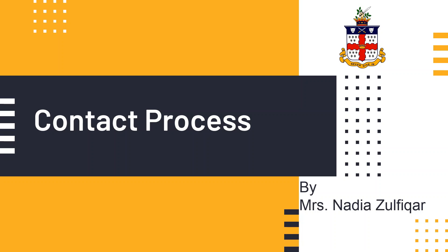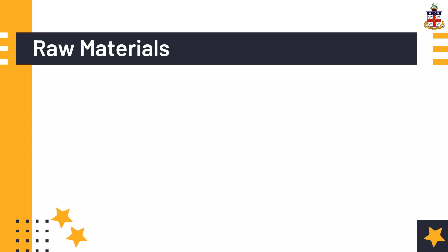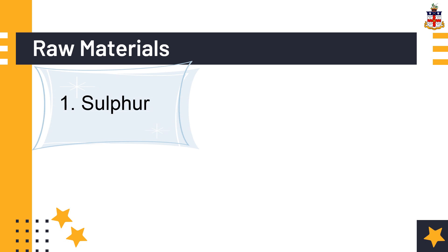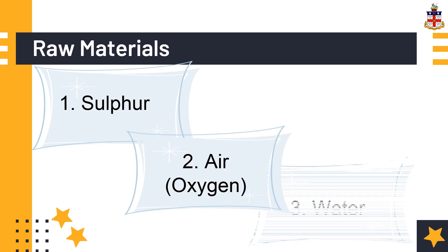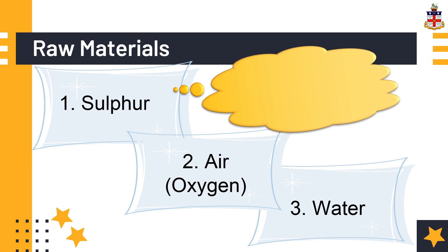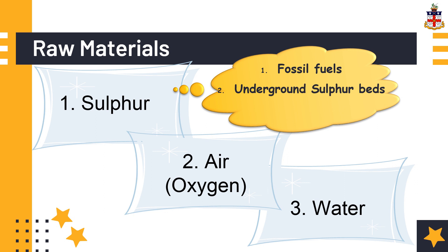The contact process is the most common process used for industrial manufacture of sulfuric acid. The simple raw materials used in the contact process are sulfur, air and water. Sulfur can be obtained from fossil fuels like natural gas, coal, and petroleum, from underground sulfur beds in the form of minerals, and it is also found around the rims of volcanoes.